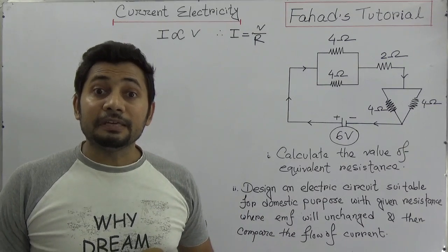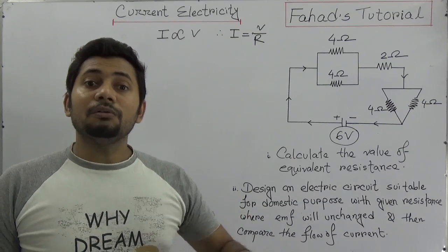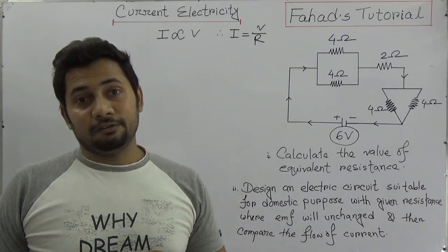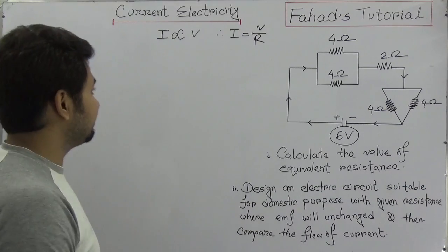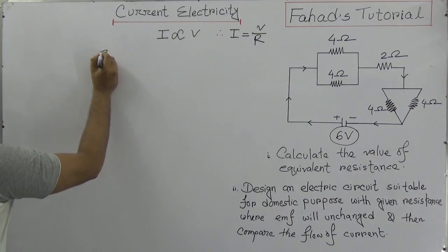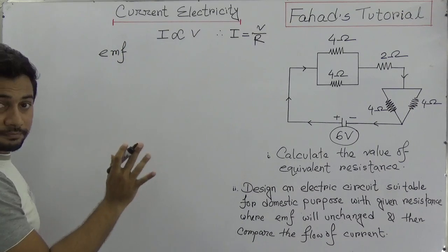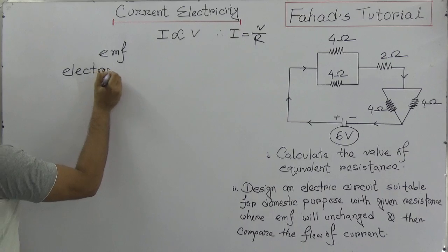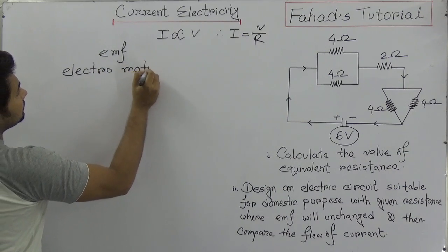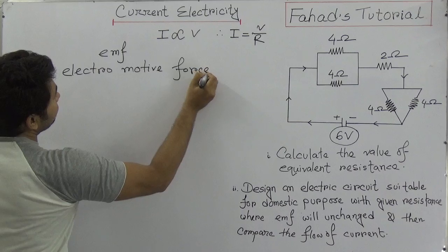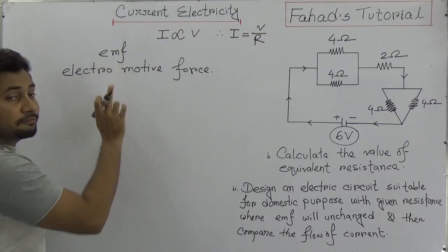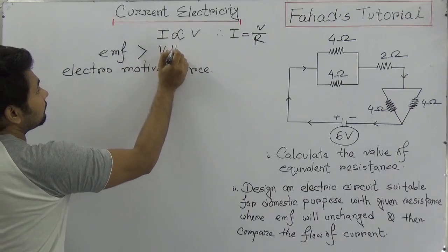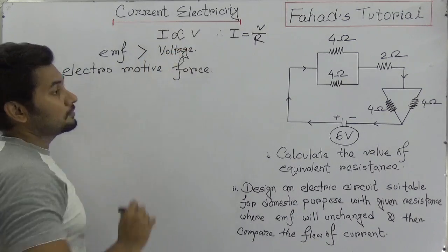Question B might be: the value of EMF is always greater than the potential difference in a closed circuit. This is a very important thing to remember — EMF, or electromotive force, is always greater than the voltage of a closed circuit.